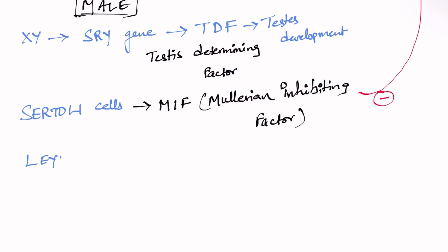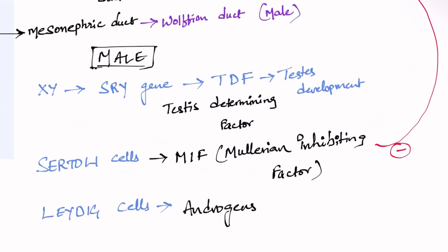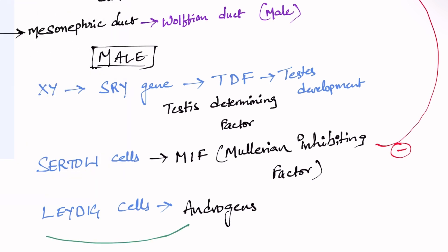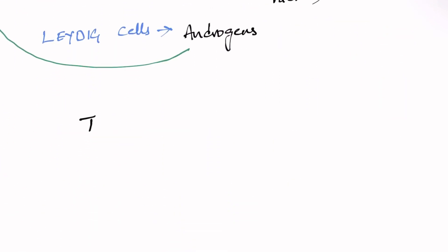There is one more cell type called Leydig cells. These cells secrete testosterone, which means androgens. These androgens stimulate and help the mesonephric duct to proliferate into male gonadal structures. So these are the three important things — that is how a male child is born.